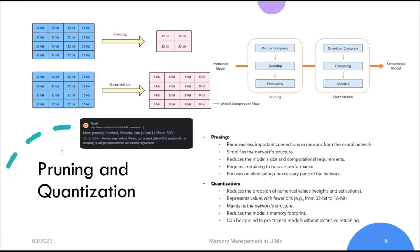Quantization, on the other hand, focuses on reducing the precision of numerical values — weights and activations — in the model. It involves representing values with fewer bits; for example, instead of using 32-bit floating point numbers, you might use 16-bit fixed point numbers. Quantization aims to maintain the model's structure and architecture while reducing memory and computational requirements. In essence, pruning trims the neural network by eliminating less important connections or neurons, while quantization reduces the precision of numerical values to save memory without fundamentally altering the network's structure.